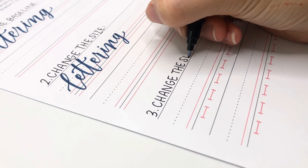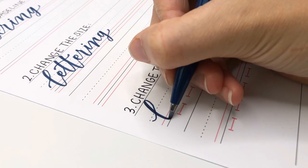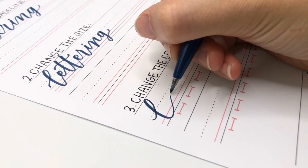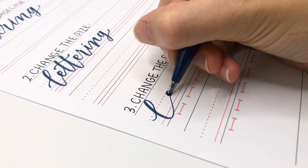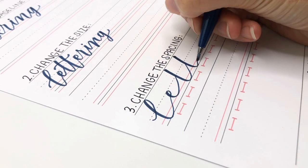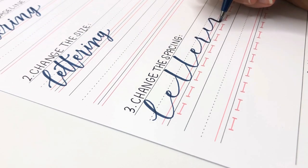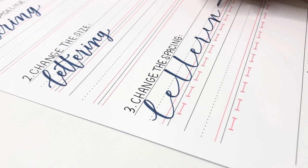Number three, changing the spacing. This is my personal favorite. To make your letters look like they're dancing elegantly, we're going to add some space in between the letters. You're still changing the baseline and size, but now we are spreading them apart.